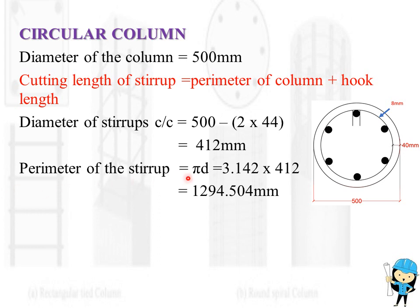Next, perimeter of the stirrup, which is equal to πd. Pi value is 3.142 and d is the diameter of the stirrup, which will be 412 mm. Therefore, perimeter of the stirrup is equal to 1294.504 mm.